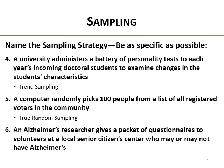An Alzheimer's researcher gives a packet of questionnaires to volunteers at a local senior citizen center who may or may not have Alzheimer's. They want to do Alzheimer's research but the participants may not have Alzheimer's — they're just giving it to whoever they can find. This is a convenience sample.